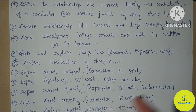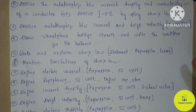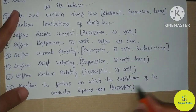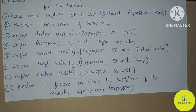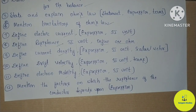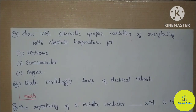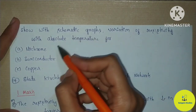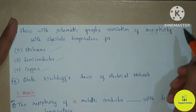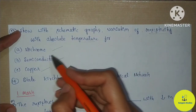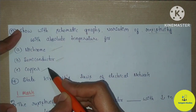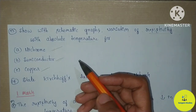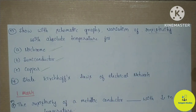Also define zero resistance. Next, write the factors on which resistance of a conductor depends, along with the expression — this is a 3-mark topic. Show the schematic graphs of variation of resistivity with absolute temperature for nichrome, semiconductor, and copper. These resistivity versus temperature graphs are drawn — this is a 3-mark chance.